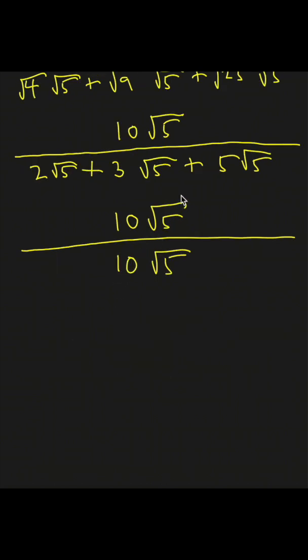Finally, we can cancel. 10 times the square root of 5 divided by 10 times the square root of 5 is 1. And that's our answer. Thanks for watching.